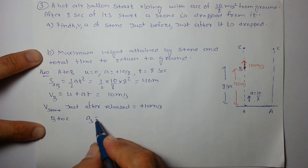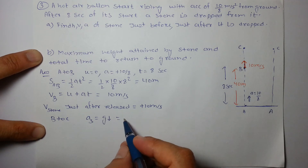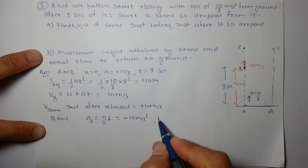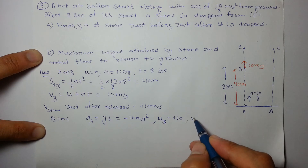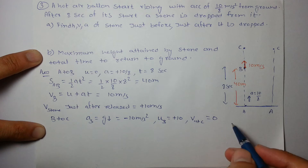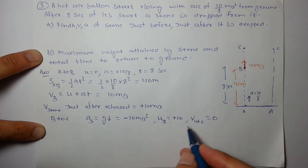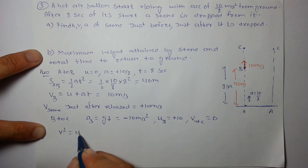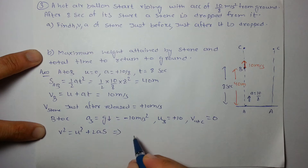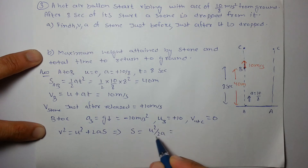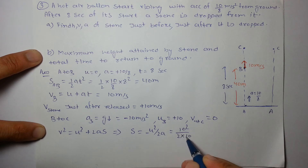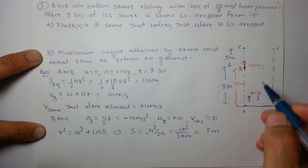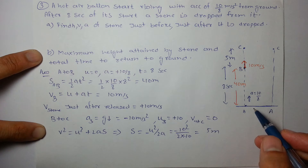As the stone is in the air, its acceleration is g downward. With upward positive, acceleration = −10 m/s². Initial velocity at B is +10 m/s. At maximum height C, final velocity v = 0. Using v² = u² + 2as, we get s = u²/2a = 10²/(2×10) = 5 meters. So the stone moves a further 5 meters upward. Maximum height from ground = 40 + 5 = 45 meters.